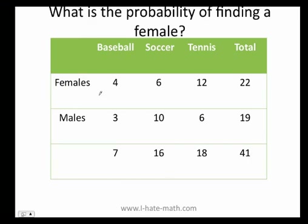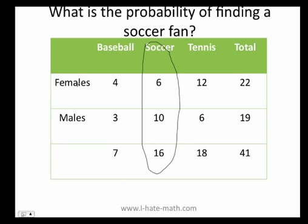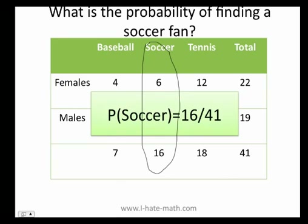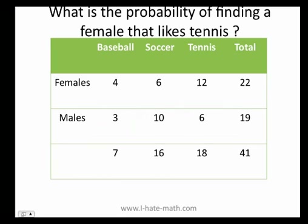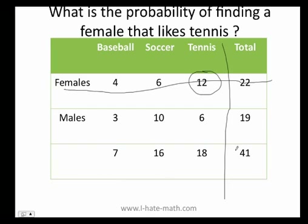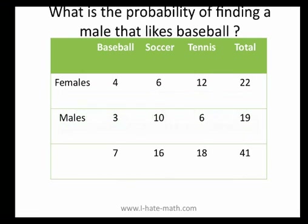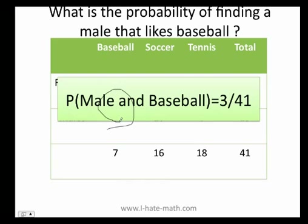What is the probability of finding a female? Females — we have 22 out of 41. What is the probability of finding a soccer fan? In total there are 16 soccer fans — 6 females and 10 males — so 16 out of 41. What is the probability of finding a female that likes tennis? I just find the intersection, which is 12 out of 41. What is the probability of finding a male that likes baseball? That's 3 out of 41.